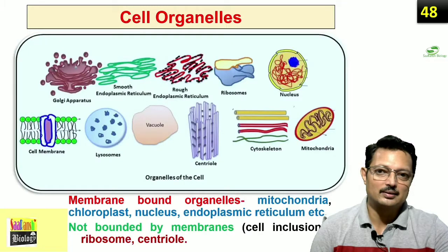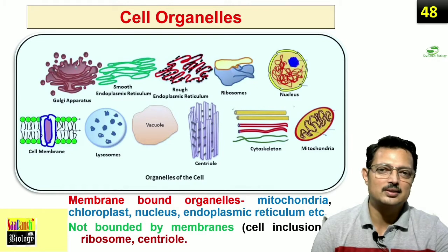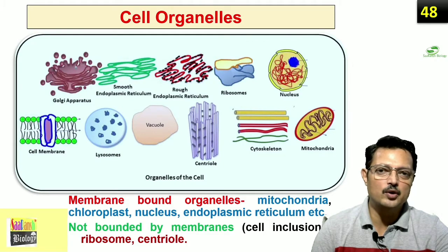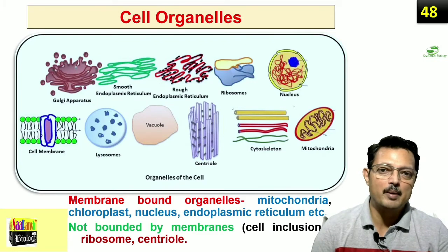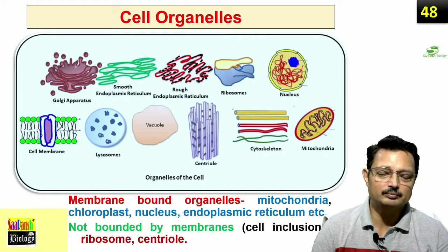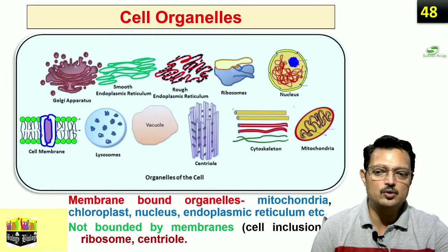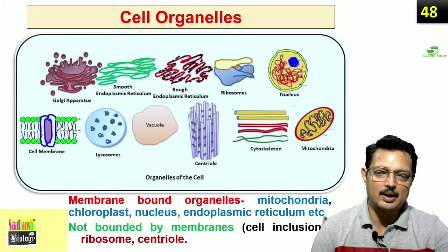Let us move on to the cell organelles. In eukaryotic cells there are many organelles characterized by membrane-bound structures that perform different functions. This is not so in the case of prokaryotic cells. You will find membrane-bound organelles like mitochondria, chloroplast, nucleus, and endoplasmic reticulum. Some are not bound by membranes — those are called cell inclusions and include ribosome and centriole.